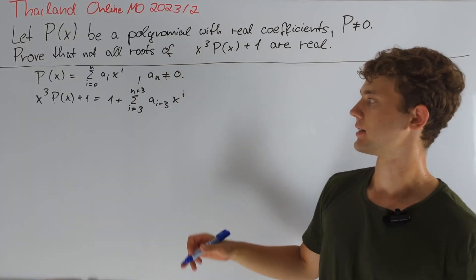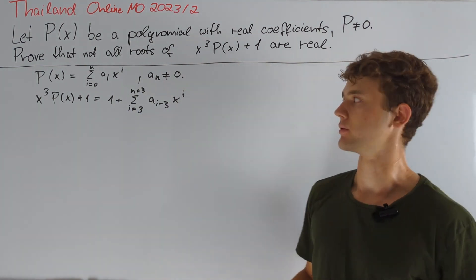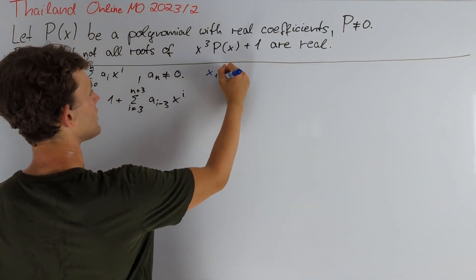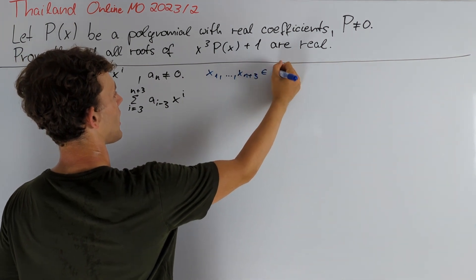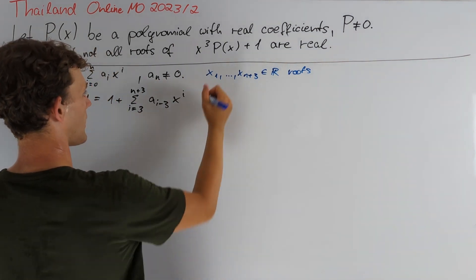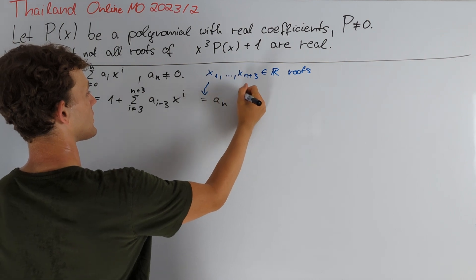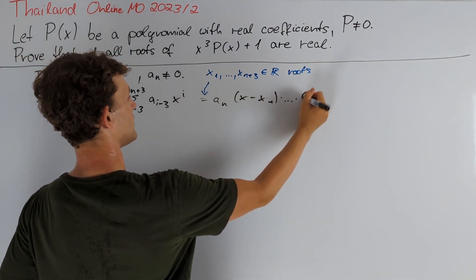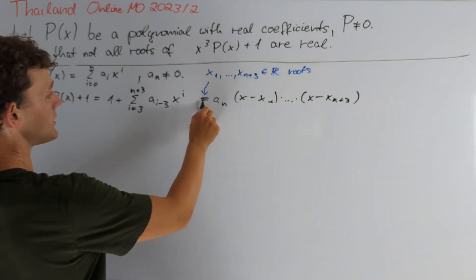The problem asks us to prove that all polynomials that can be written in that way have a non-real root. So let us assume the opposite so that x₁ up to xₙ₊₃ in ℝ are the roots of our polynomial. And this tells us that we can write it as aₙ times (x - x₁) times so on times (x - xₙ₊₃).